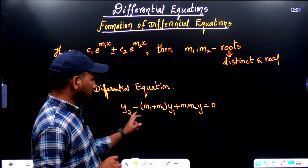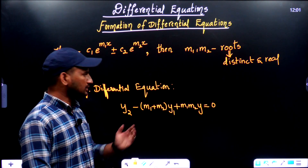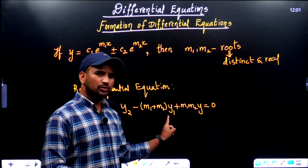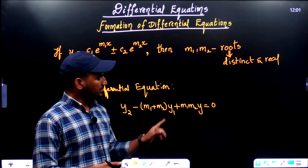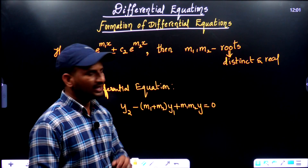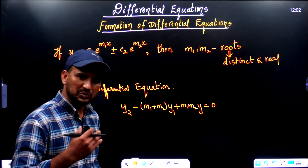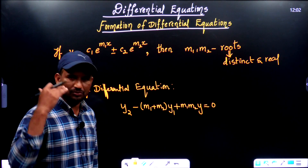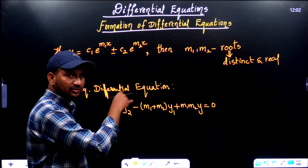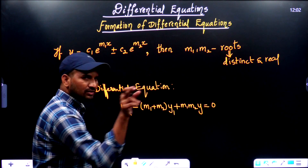The required differential equation is: y2 - (m1 + m2)·y1 + m1·m2·y = 0. So this is y2 minus the summation of roots times y1, plus the product of roots times y, equals 0. This is the differential equation — the required differential equation when you have this type of solution form.